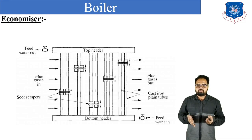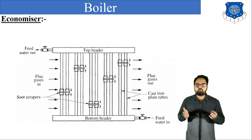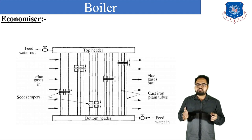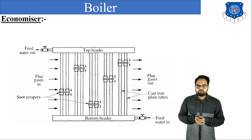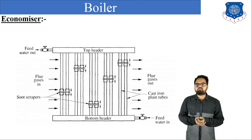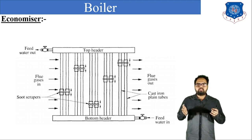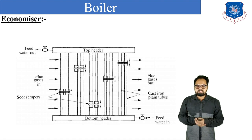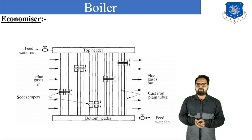Boiler accessories are the auxiliary parts of the boiler which are used for increasing the efficiency or the performance of the boiler. Today we will discuss economizer, superheater, and air preheater.